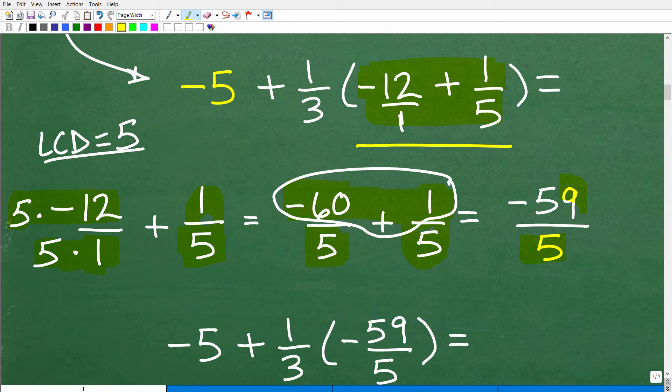So now I've just rewrote this fraction as -60/5 + 1/5. So this is easy now to do because the denominators are the same, 5 and 5. So I simply add the numerators. So -60 + 1 is -59. -59/5, again if you don't understand that, you need to review the rules for positive and negative numbers.